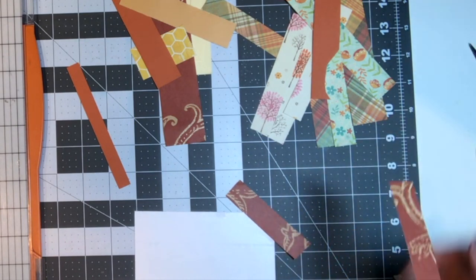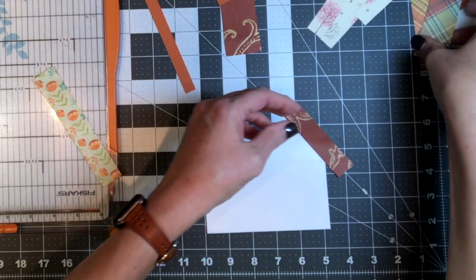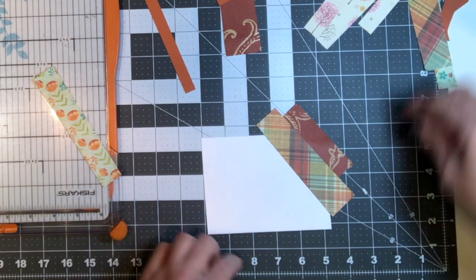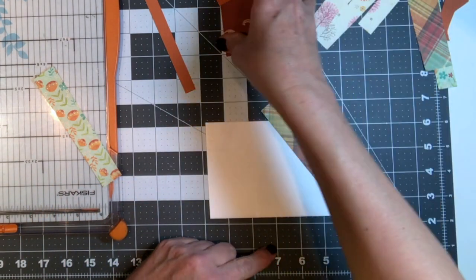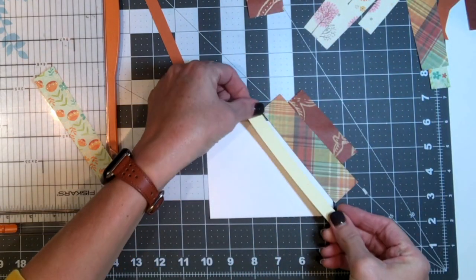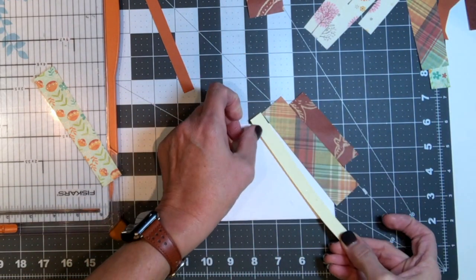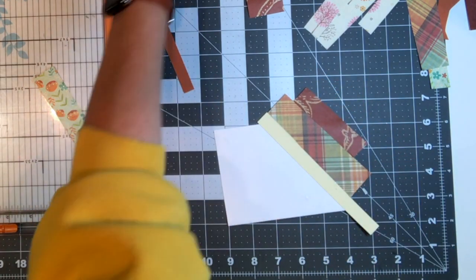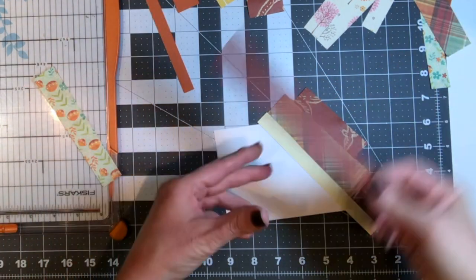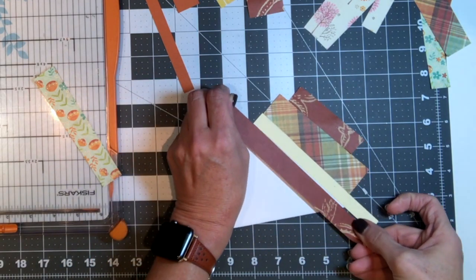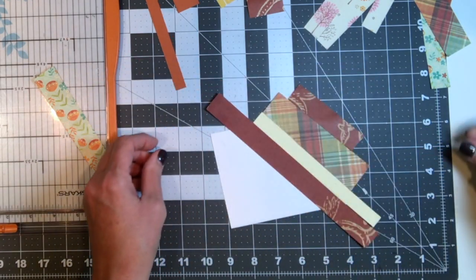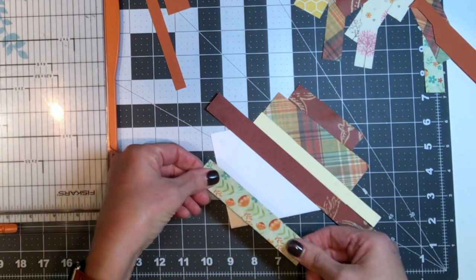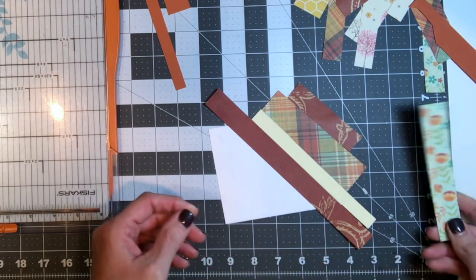So here I have sped up the video just a little bit, just to not bore you with watching me stick strips of paper down on the paper over and over. But basically, you just want to make sure that when you put your piece of paper down that the entire end is hanging off of the paper on both sides. You don't want any white to show from your card underneath. You want all of that sticky side to be covered.